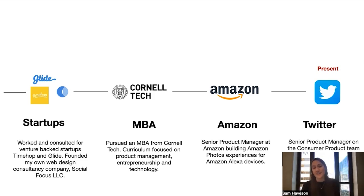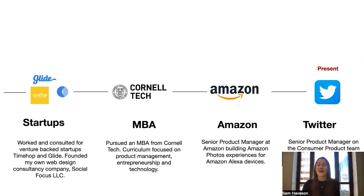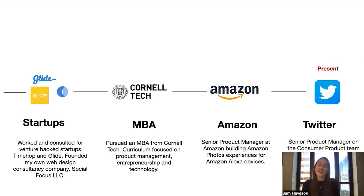Following my MBA, I started my product journey as a senior PM at Amazon, where I was focused on building Amazon Photos experiences for Amazon Alexa devices. It was based in Seattle, and it was an awesome experience. Flash forward to today, I am currently a senior product manager on the consumer product team at Twitter, focused on helping millions of people create and converse on Twitter every day. I've been here since 2018, and I am loving it.